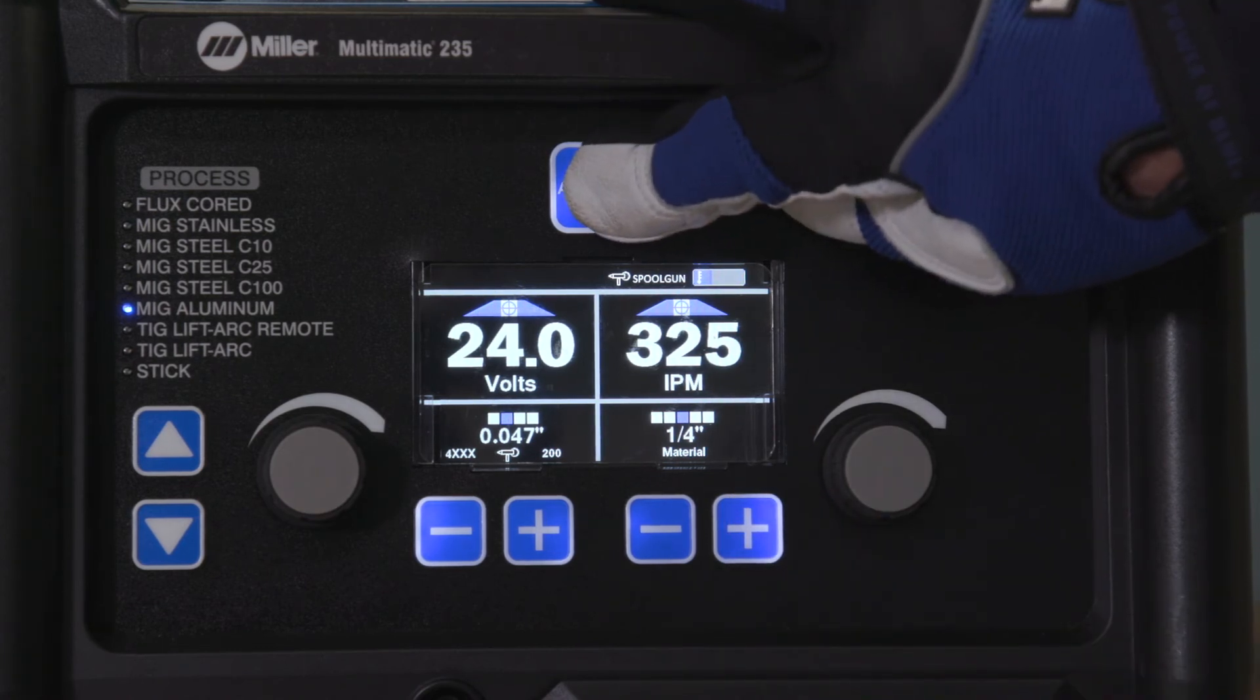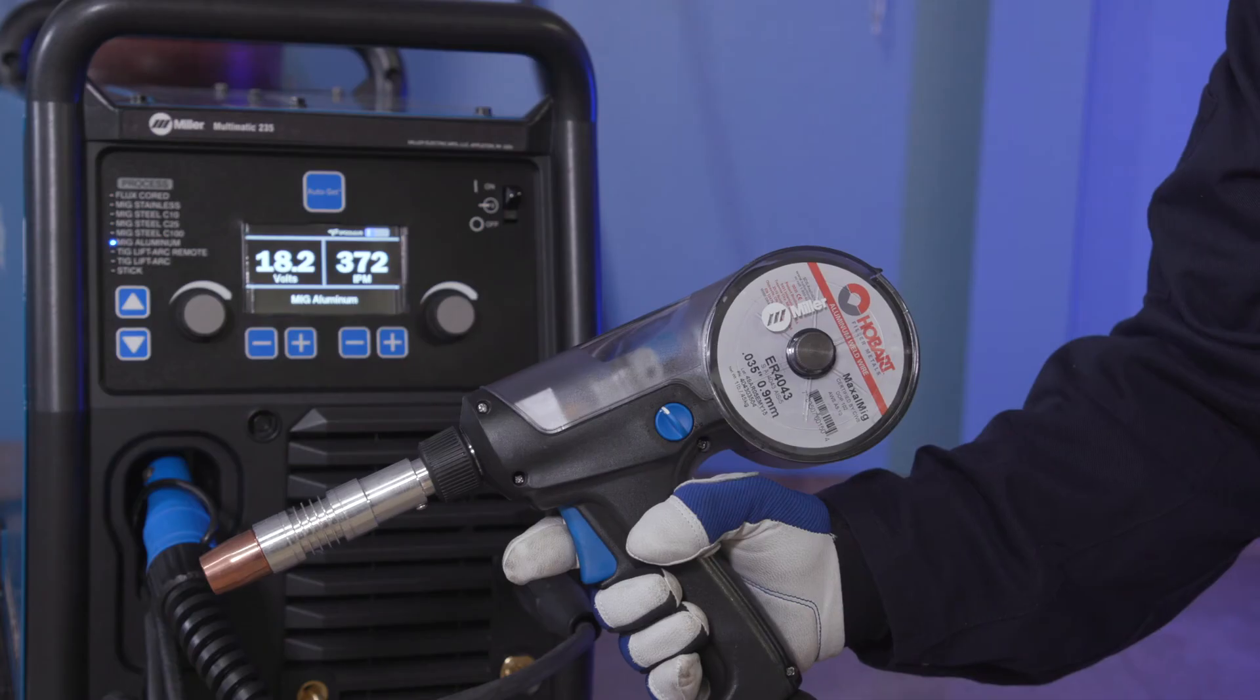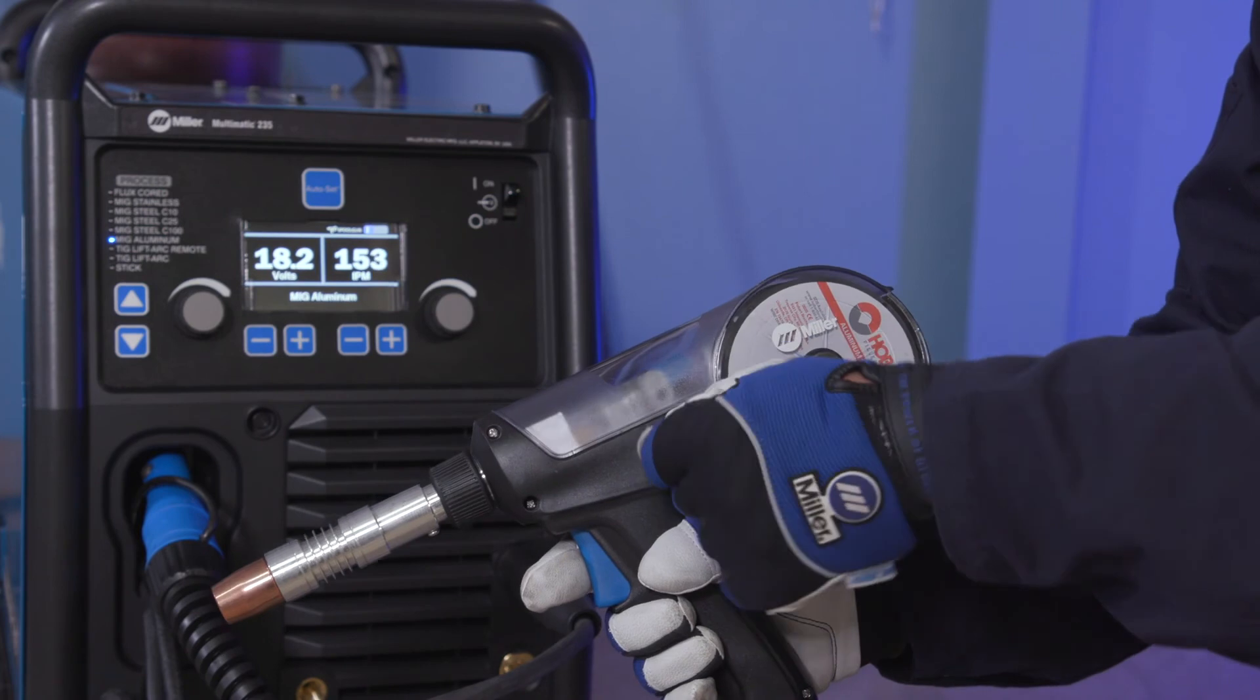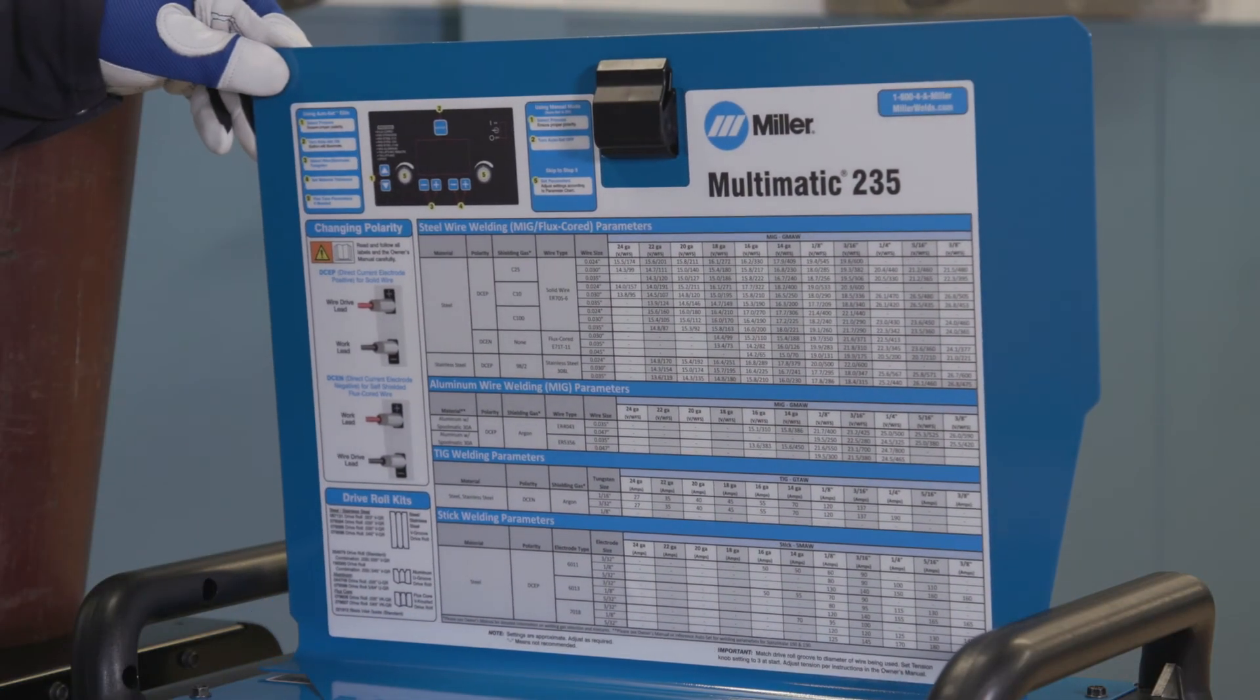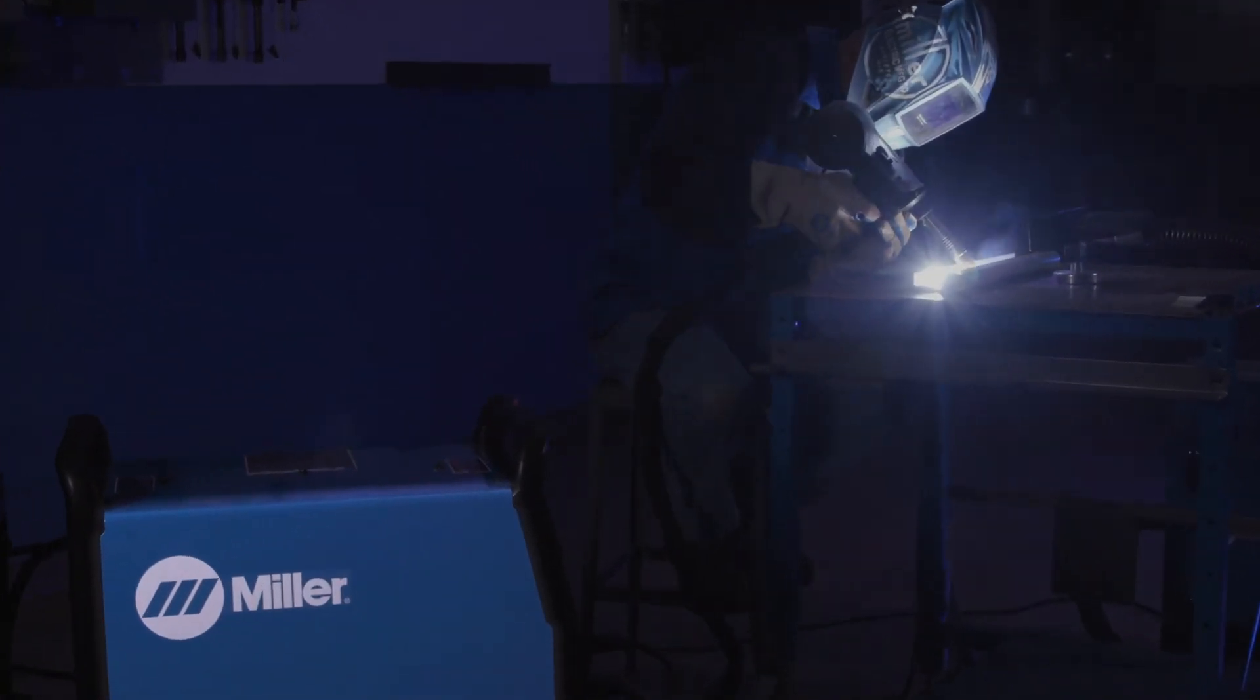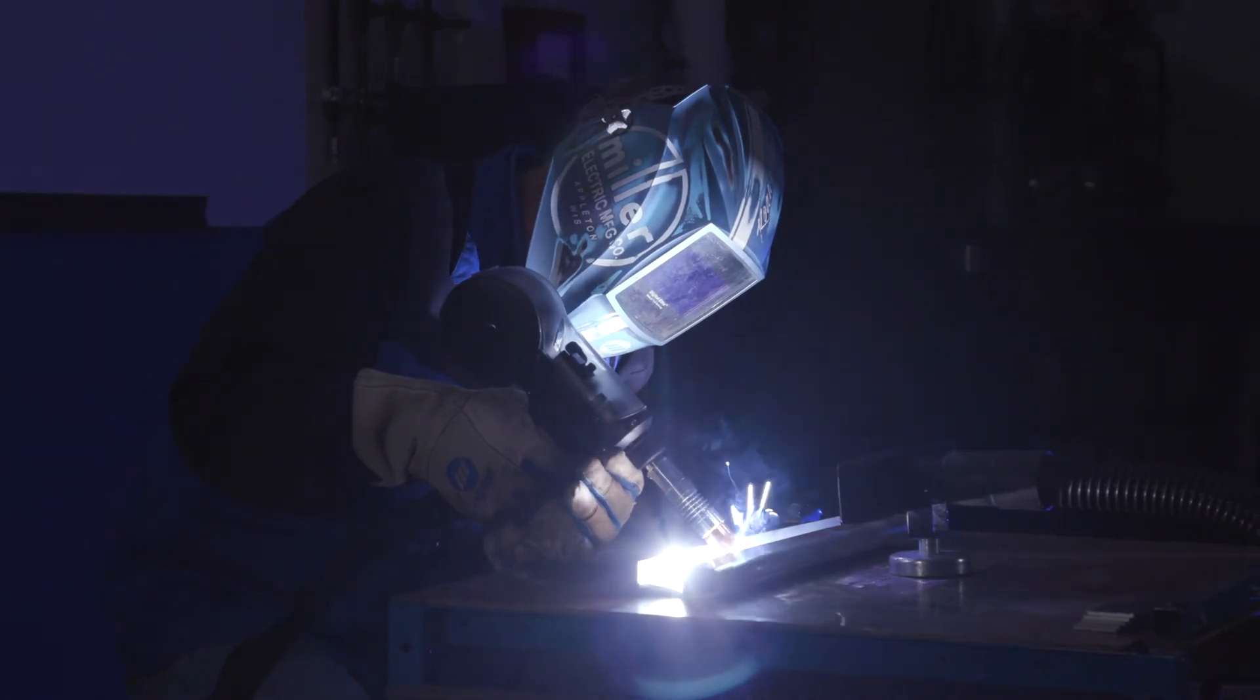Or if you are using manual mode, adjust your voltage and wire feed speed. Remember, the wire feed speed control is on the handle of the spool gun. As a setup guide, refer to the parameter chart located inside the side door. Setting up the Multimatic 235 to weld aluminum with a spool gun is as easy as that.